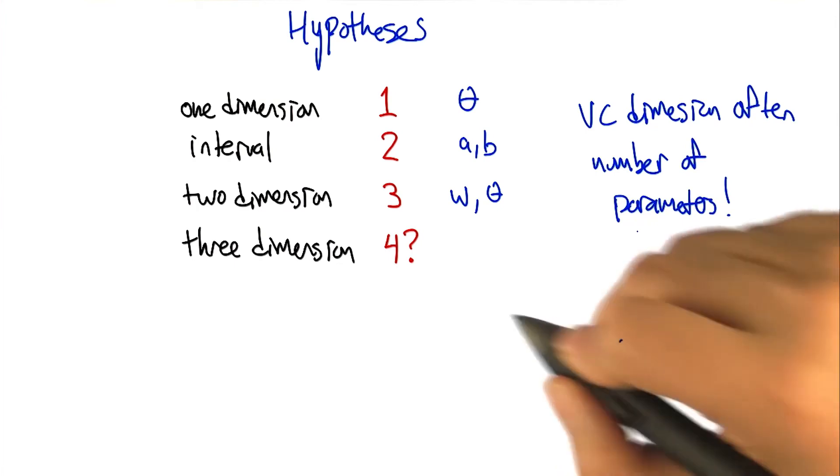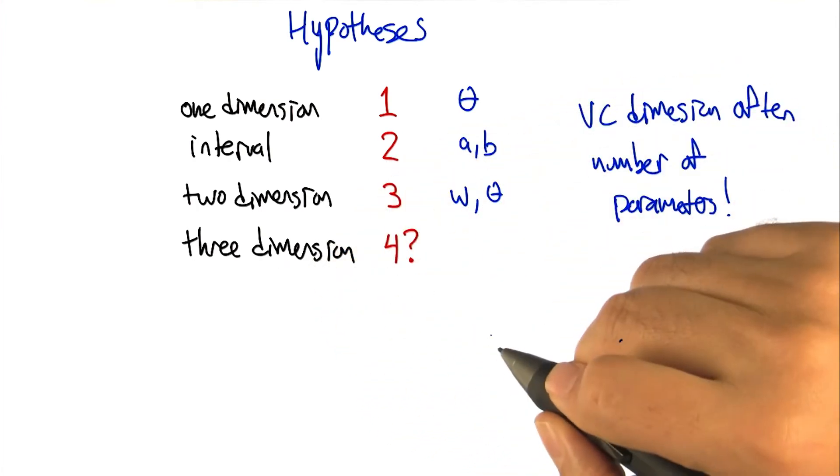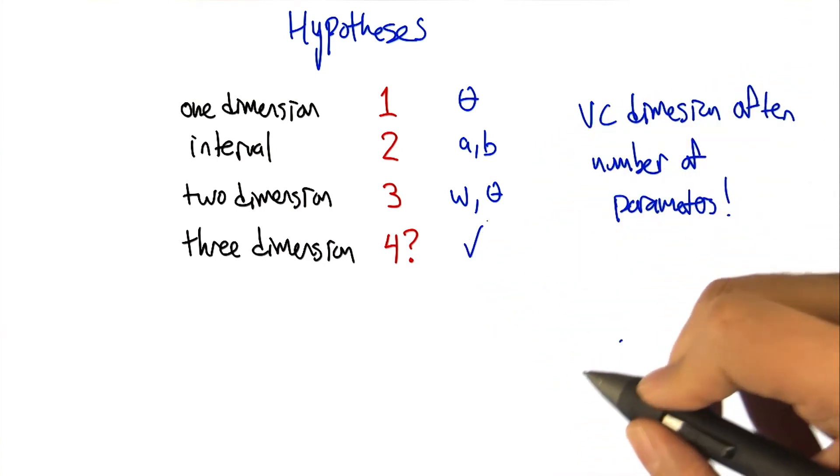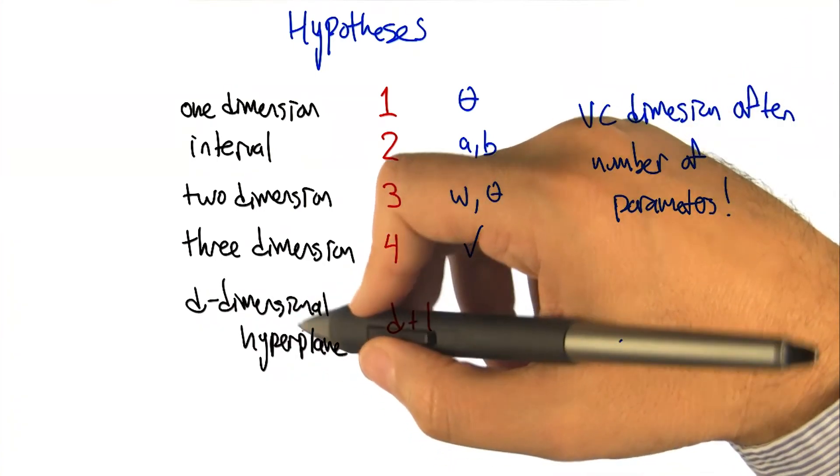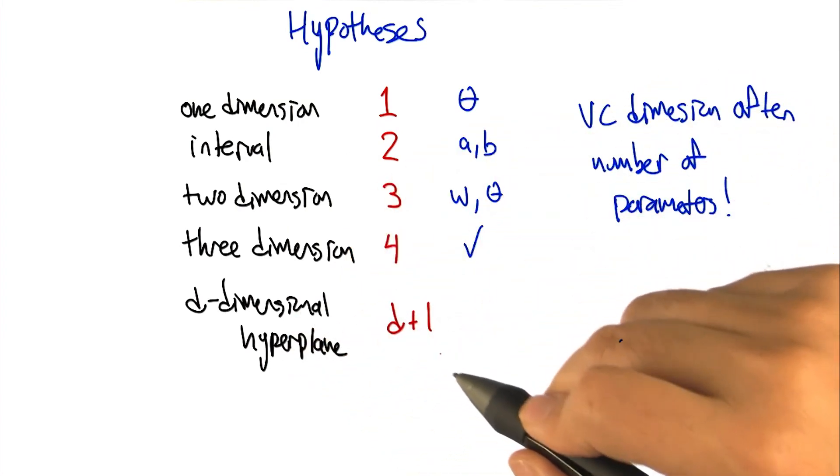That doesn't exactly answer your question. It is the case that for a three dimensional problem, there's going to be four dimensions. And so it turns out you are right. That for any d dimensional hyperplane concept class or hypothesis class, the VC dimension is going to end up being d plus one.